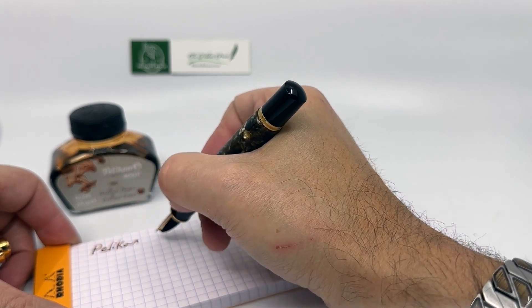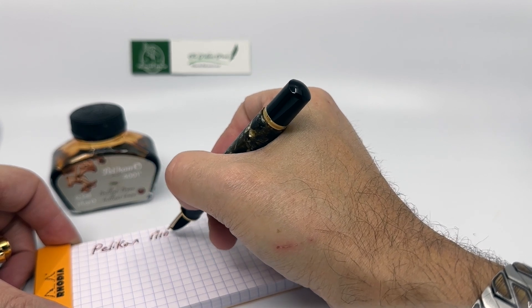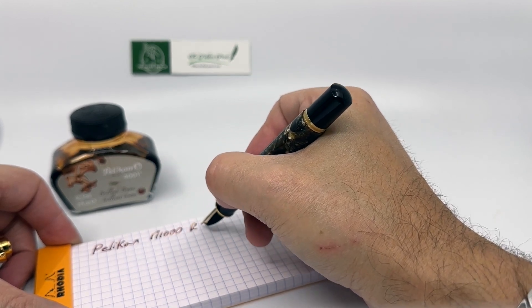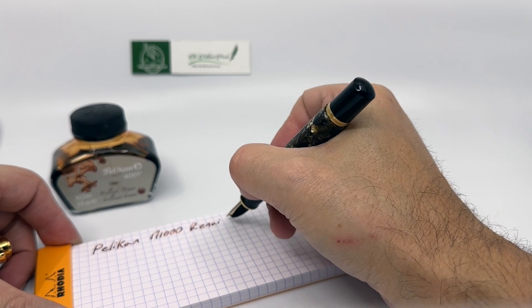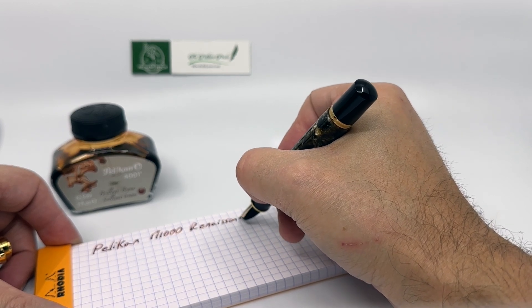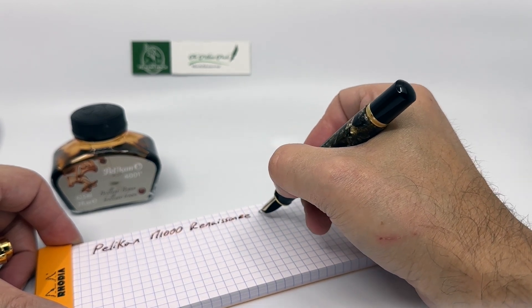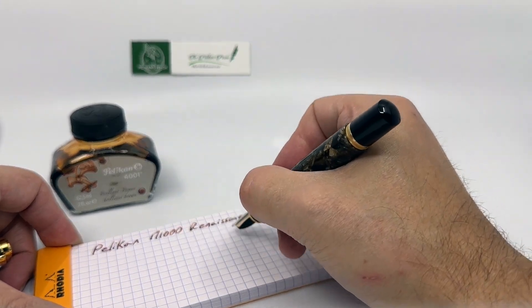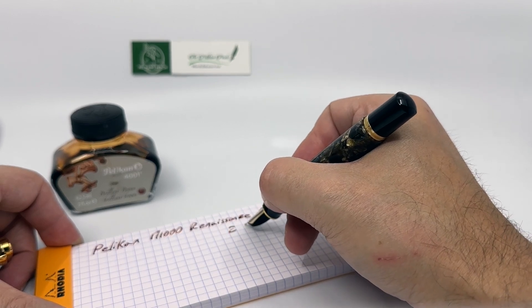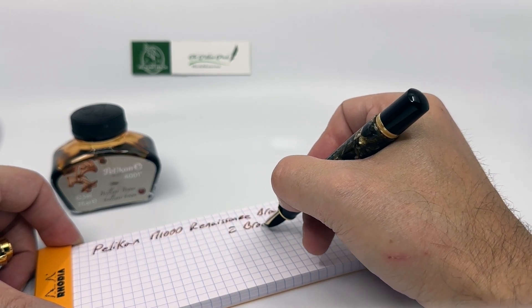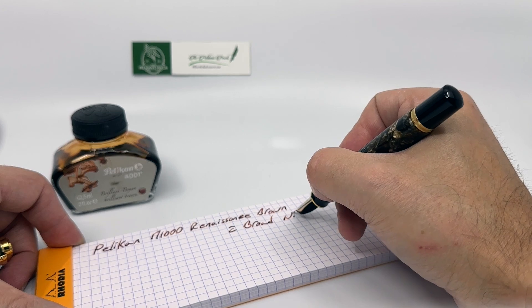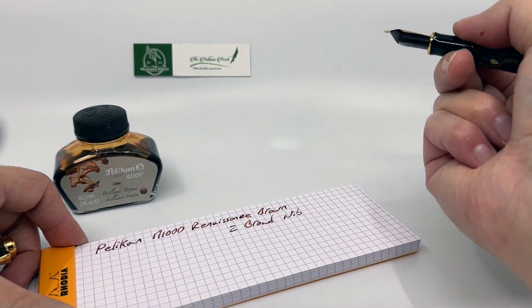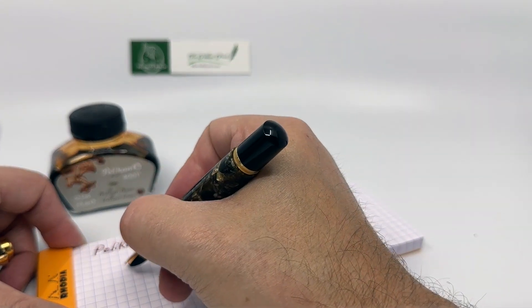In my example, I purchased a broad nib. My nib came well aligned out of the box. There were no issues with hard starts or skipping or anything of that nature. I understand there is some variability with manufacturing processes, so your mileage may vary.